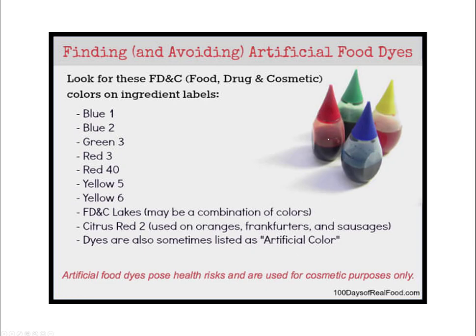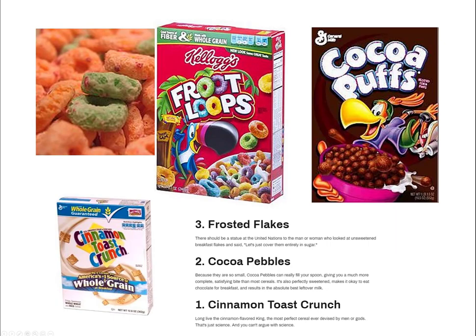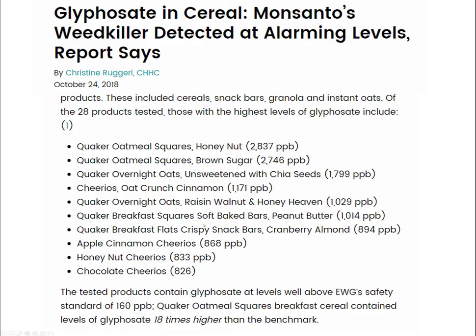FDC Lakes may contain multiple combinations of colors. Citrus Red 2 is used in frankfurters — those little red hot dogs, avoid them. Dyes are sometimes referred to as artificial colors and don't really add anything; it's all about marketing. Fruit Loops, Cocoa Puffs, Cinnamon Toast Crunch — these cereals have colors and additives. Reading the contents of your food labels is really important.